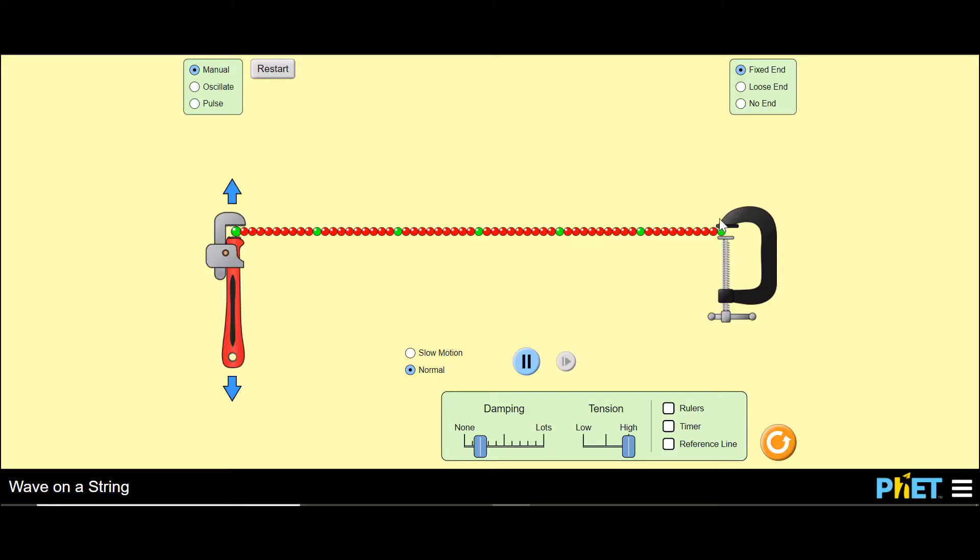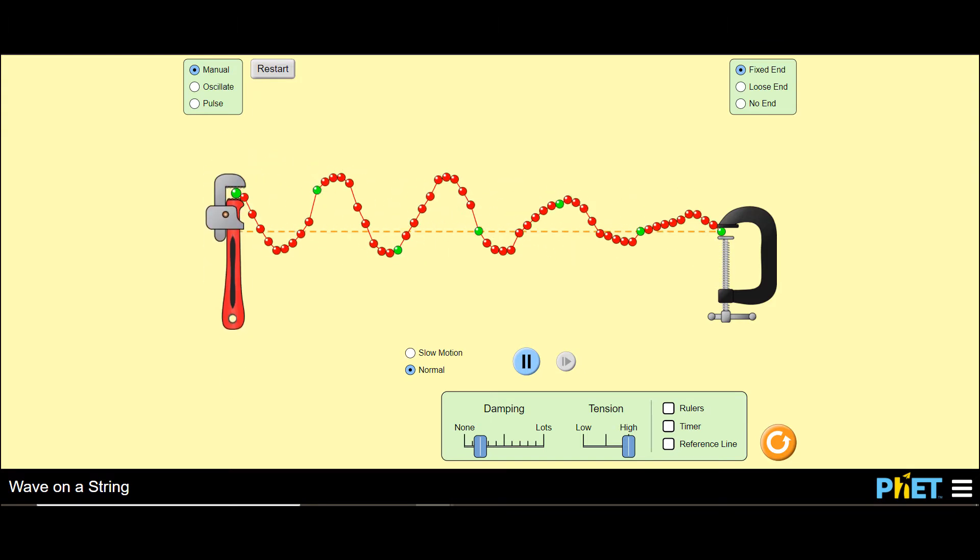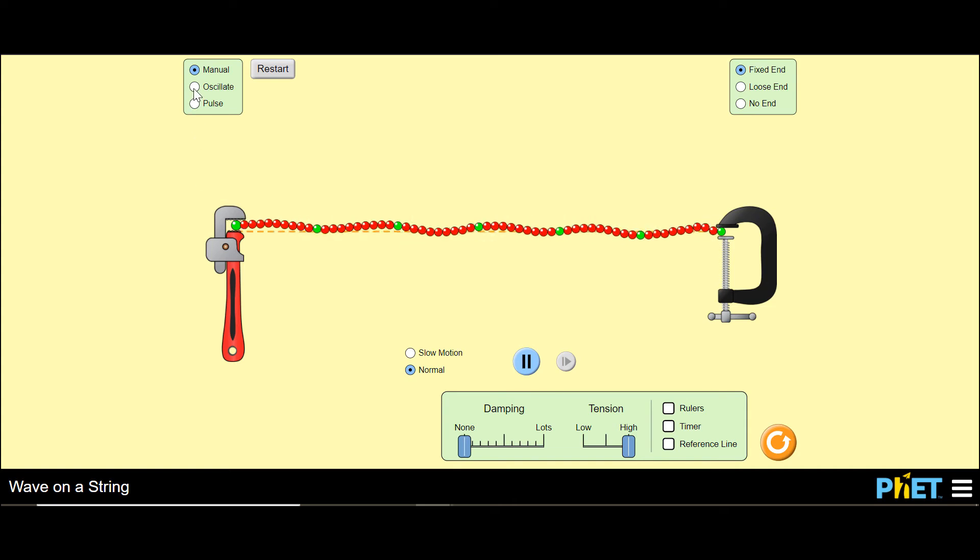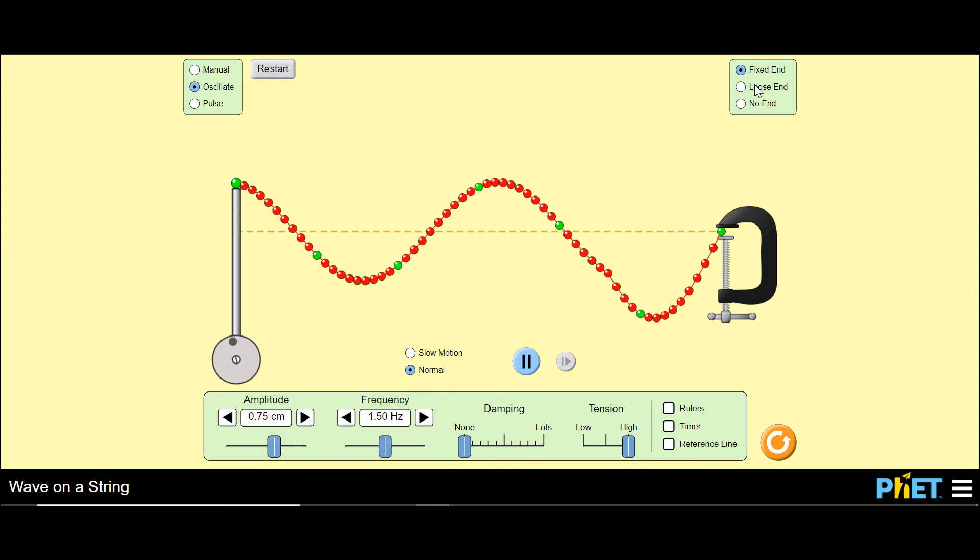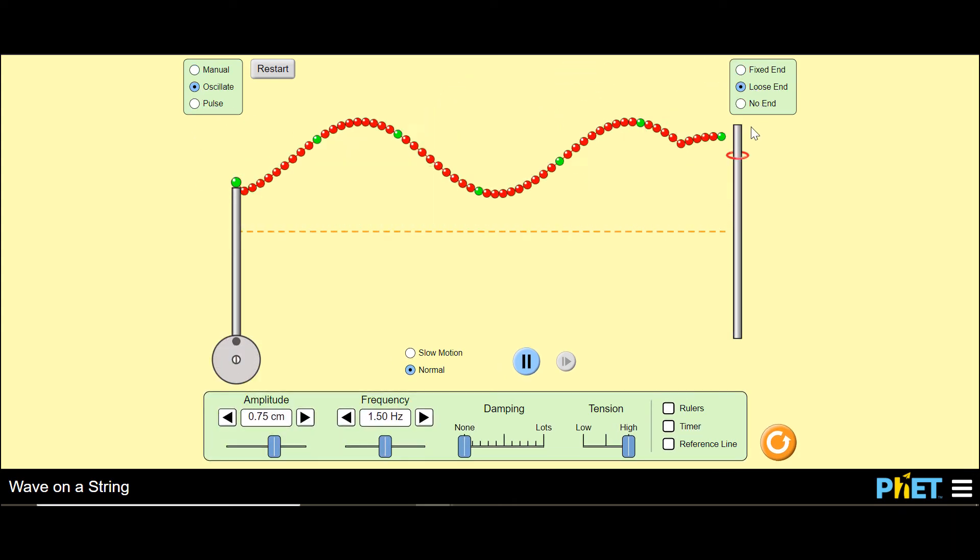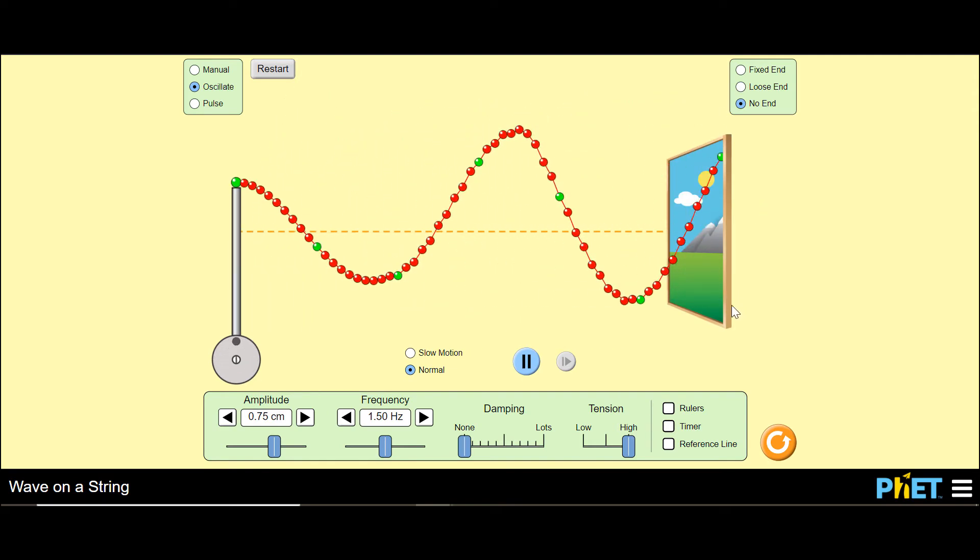So here on the PHET simulation, we can play around with things. We can play with waves and pulses and stuff. But right now I want to take a look at the scenario that most appropriately resembles wave and light behavior. So I got the damping down to nothing. I got a frequency oscillating.